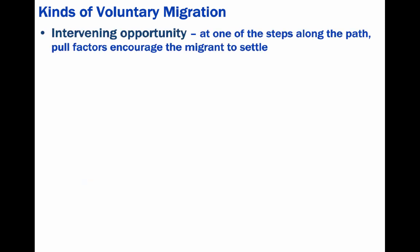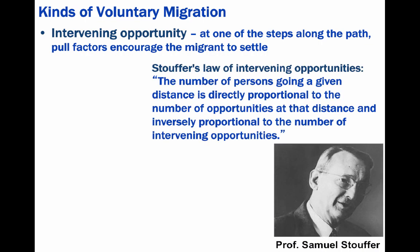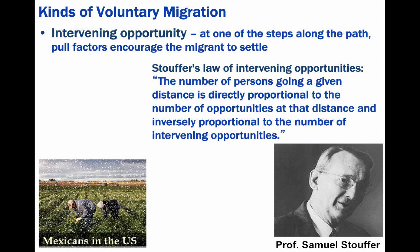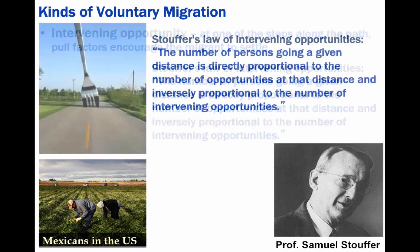Stouffer's Law of Intervening Opportunities states that the number of persons going to a given distance is directly proportional to the number of opportunities at that distance and inversely proportional to the number of intervening opportunities. This is why so many Mexican farmers migrate to the United States, as opposed to Europe, for example. As the great Yogi Berra once said, when you get to that fork in the road, take it.